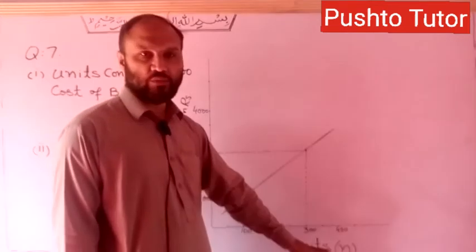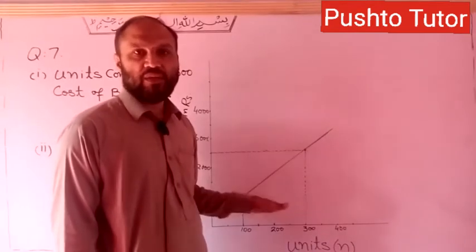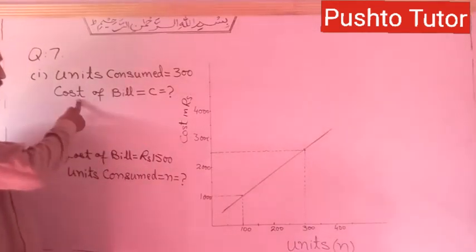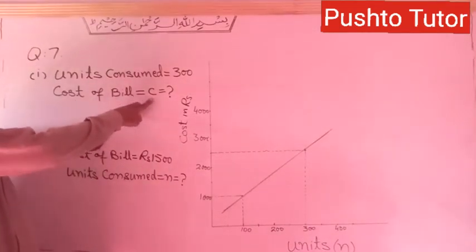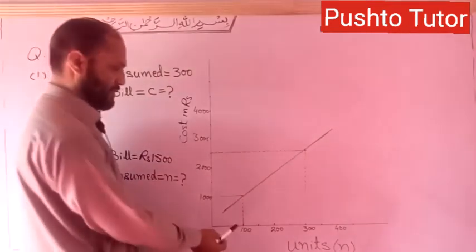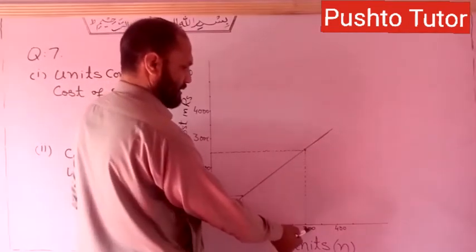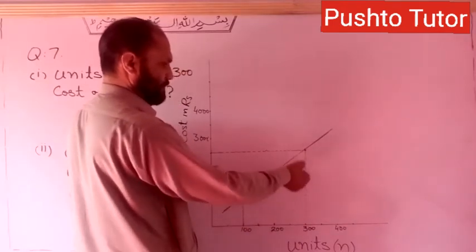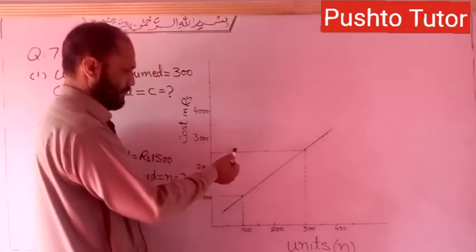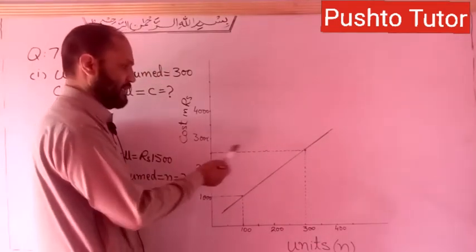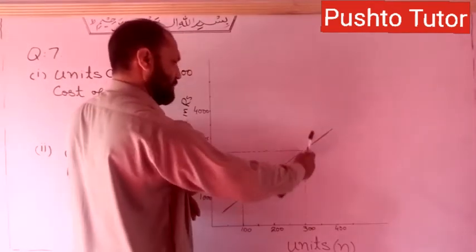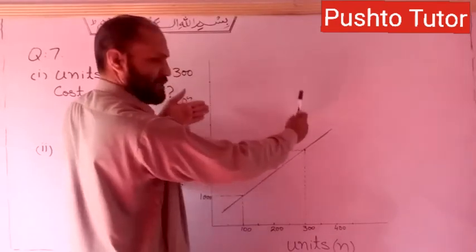This is the units axis. This is the graph. We have two quantities. The cost of units consumed is 300 units. This is a straight line. This is the axis for the cost.